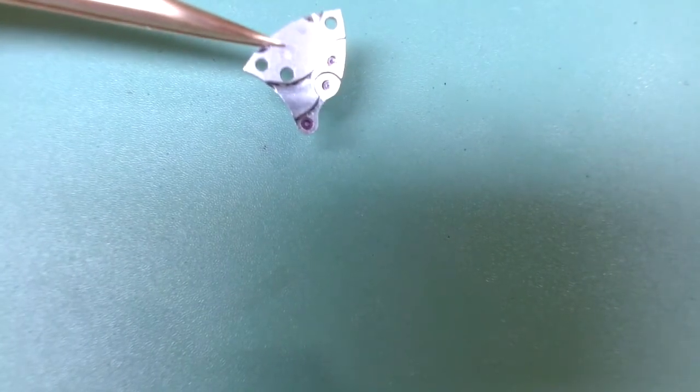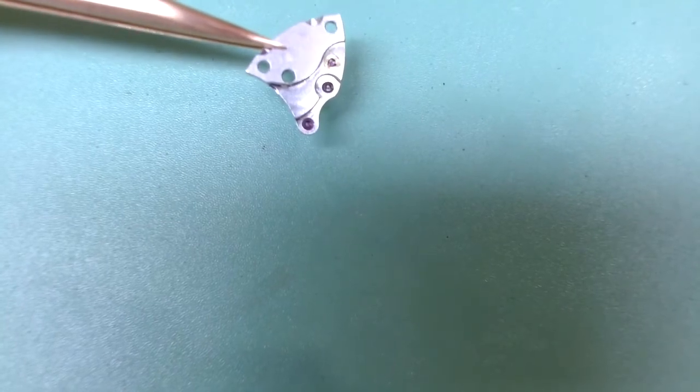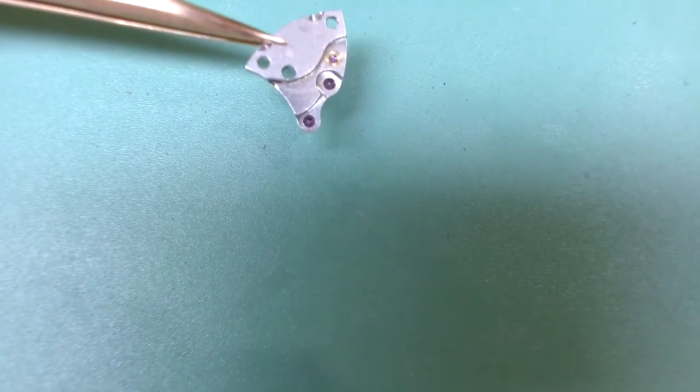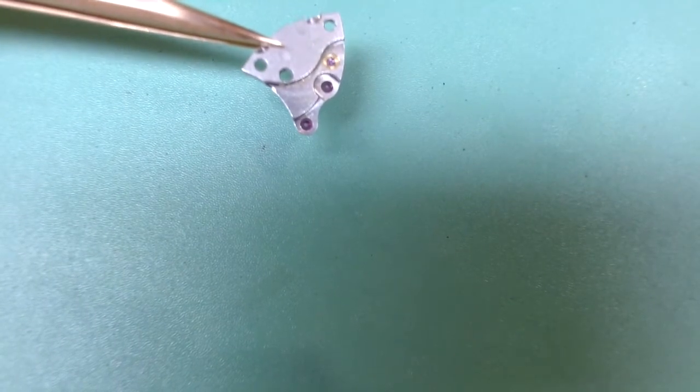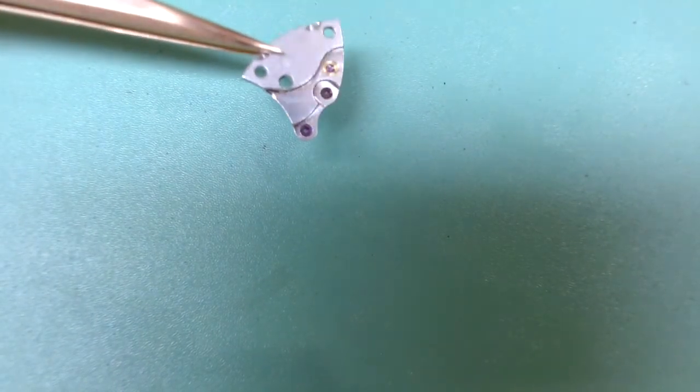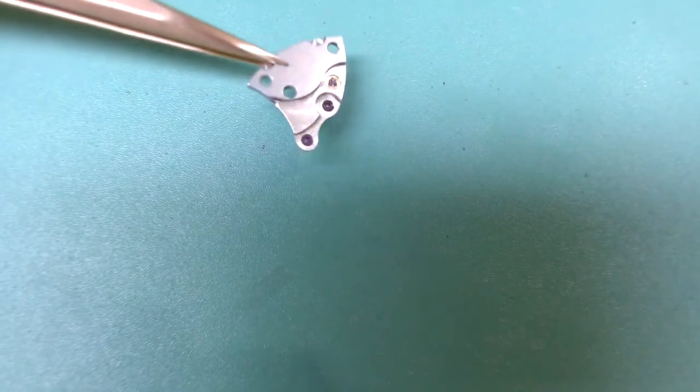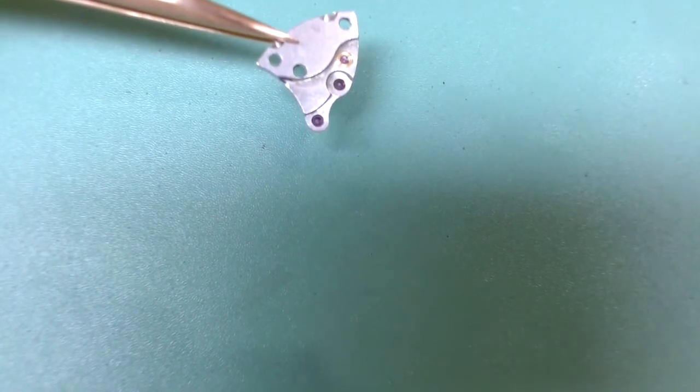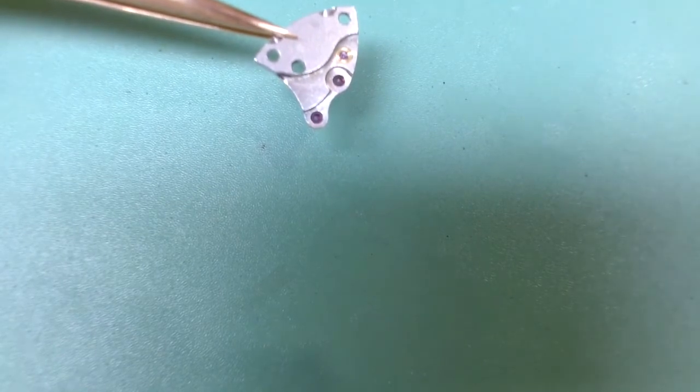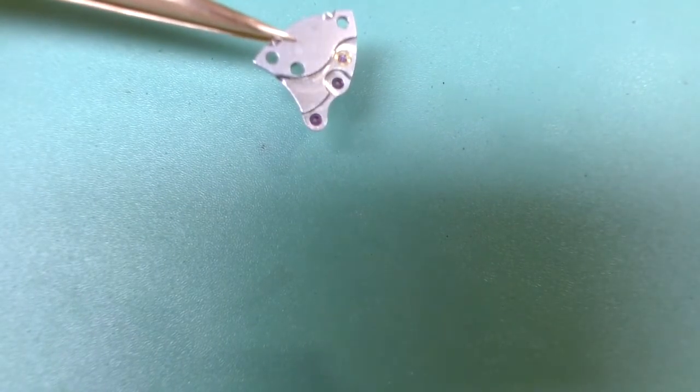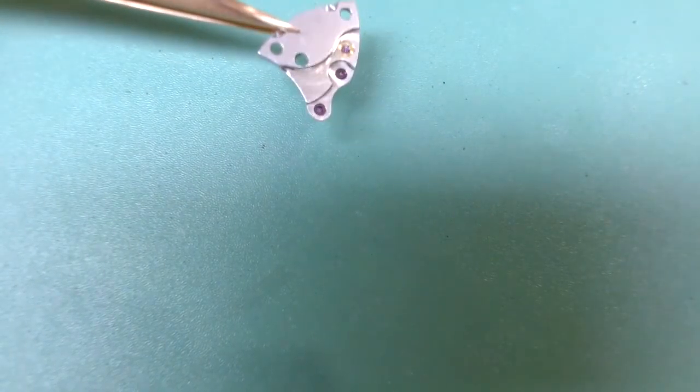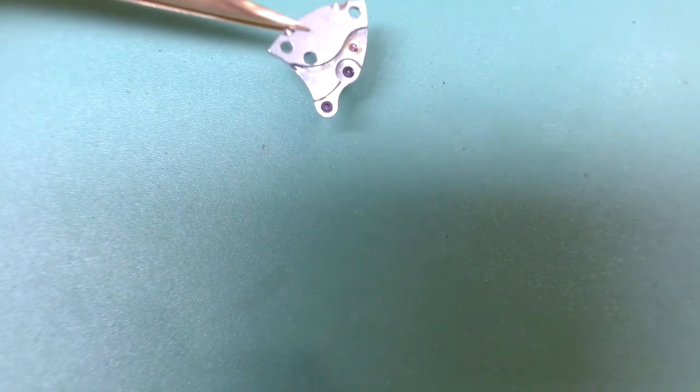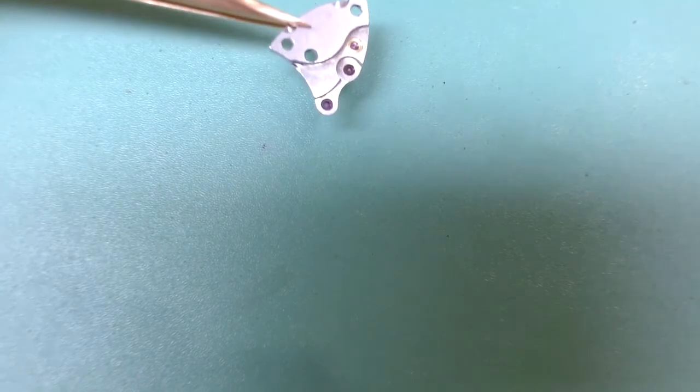Now this indicates to me that the watch possibly was serviced recently, but mixed in with that lubrication we can see a lot of dirt and grime. I can even see a hair on that fourth wheel. So we can see that it may have been serviced recently but I would say there's far too much lubrication there on those train wheels.